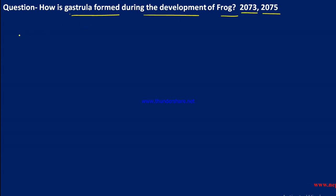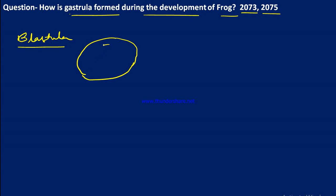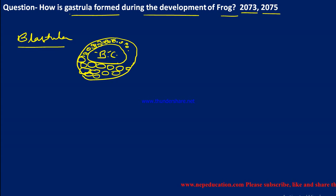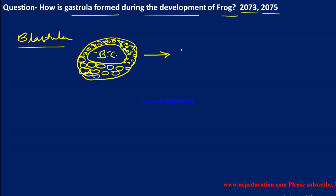Before the gastrula, one stage happens that all of you know — that is the blastula. In the blastula, cells are arranged into a single layer, and there is one cavity called the blastocoel. Towards the animal pole, micromeres are present, and towards the vegetal pole, there is the presence of megameres or macromeres. This layer of cells is called the blastoderm.